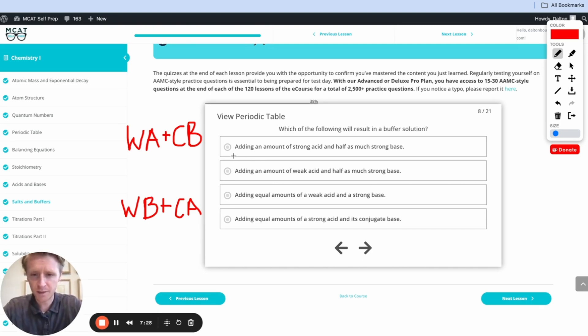Let's start with this problem right here. Adding an amount of strong acid and half as much strong base. Well, we've got a problem right there because remember, we want a weak acid, not a strong acid in our buffer solution. And so we know right away this solution right here is going to be incorrect.